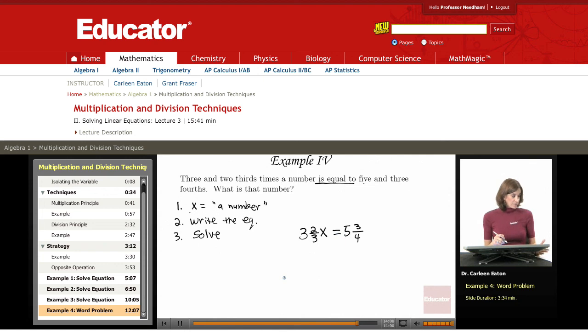Now, as I did in the previous example, I need to change these into improper fractions to make them easier to work with using the multiplication principle. So three times three is nine, plus two is eleven. So that is eleven-thirds x equals five times four is twenty, plus three, twenty-three-fourths.